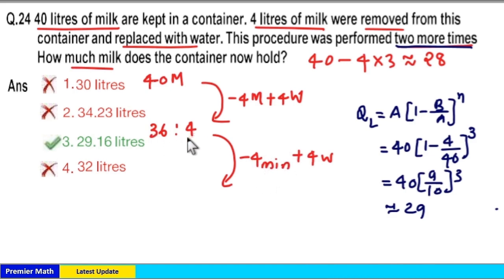So 1/10 of 36 equals 3.6. So 3.6 is taken out, means 36 minus 3.6 equals 32.4 is the milk quantity. And again here also